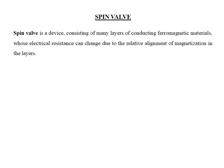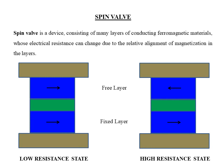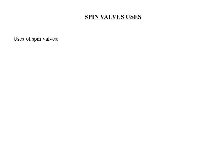Now let's discuss the spin valve, which is a device that uses the GMR effect. It consists of multiple layers of conducting ferromagnetic materials whose resistance changes due to the relative alignment of magnetization in the ferromagnetic layers. In the spin valve shown, the magnetization of the bottom ferromagnetic layer is fixed, while the top ferromagnetic layer's magnetization is free to change. When the top layer aligns parallel to the bottom layer, the structure gives a low resistance state; when anti-parallel, it is a high resistance state. Spin valves are mainly used as magnetic sensors and as read heads in magnetic hard disk drives.